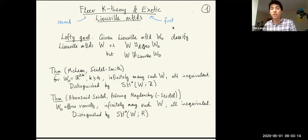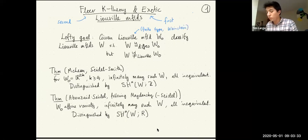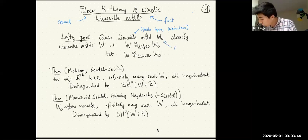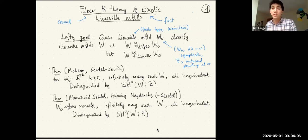Let me set the context. The lofty goal is that given a Liouville manifold W0 — you could specify further that it is finite type and Weinstein — we'd like to classify all Liouville manifolds W such that W is diffeomorphic to W0 but they're not Liouville isomorphic. A Liouville manifold means an exact symplectic manifold: the symplectic form is the derivative of lambda, and the Liouville vector field is outward pointing at infinity. Liouville isomorphism essentially means that you preserve this structure.